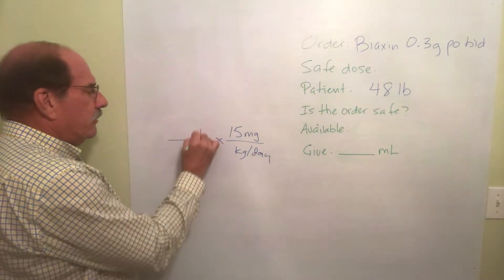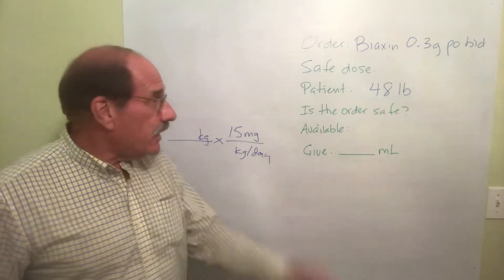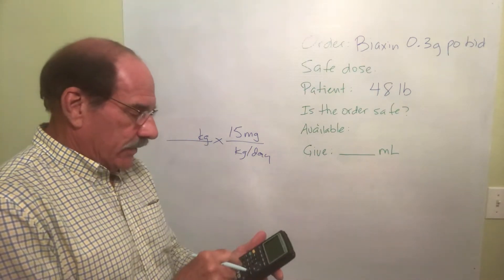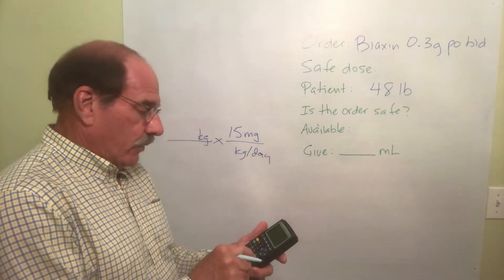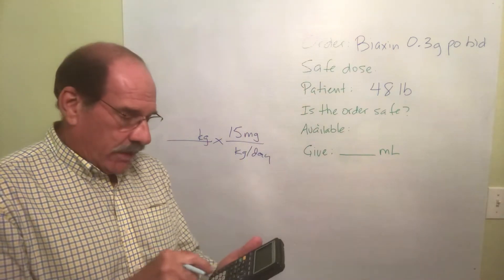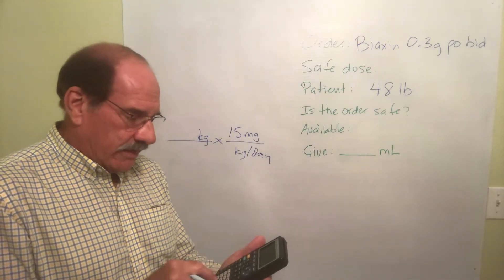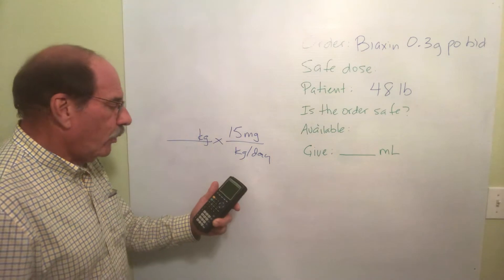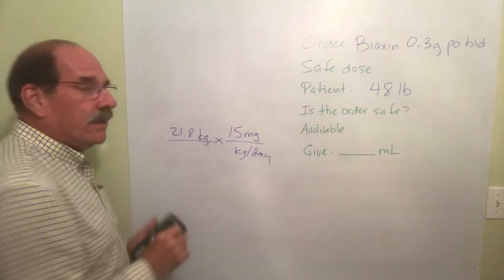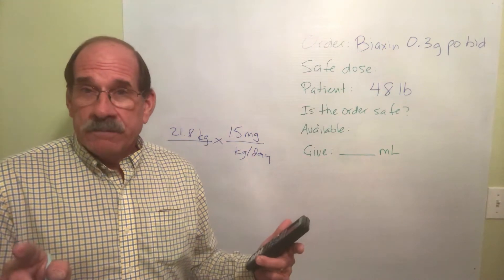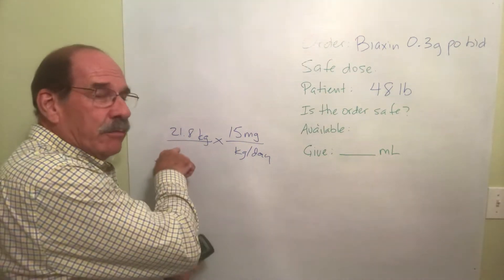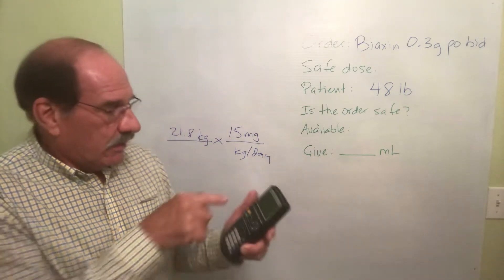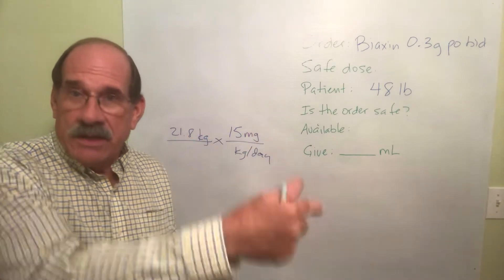We now need to multiply by the patient's weight expressed in kilograms. The patient's weight in pounds is 48. I take 48 and divide by 2.2 to convert to kilograms — you should know that already. That's 21.8 kilograms. However, you really shouldn't use a rounded-off number in a further calculation — it builds error into the problem. The best advice is to leave that number in your calculator and use it for the next step.